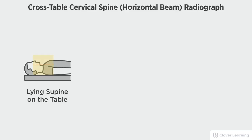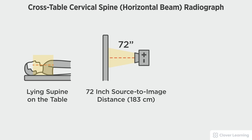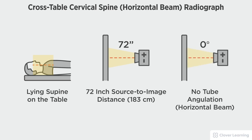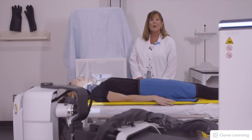In this view we will be demonstrating the cross-table lateral cervical spine using a horizontal beam. The cross-table lateral cervical spine should be performed with the patient lying on the table using a horizontal beam with a 72-inch source to image distance and no tube angulation.